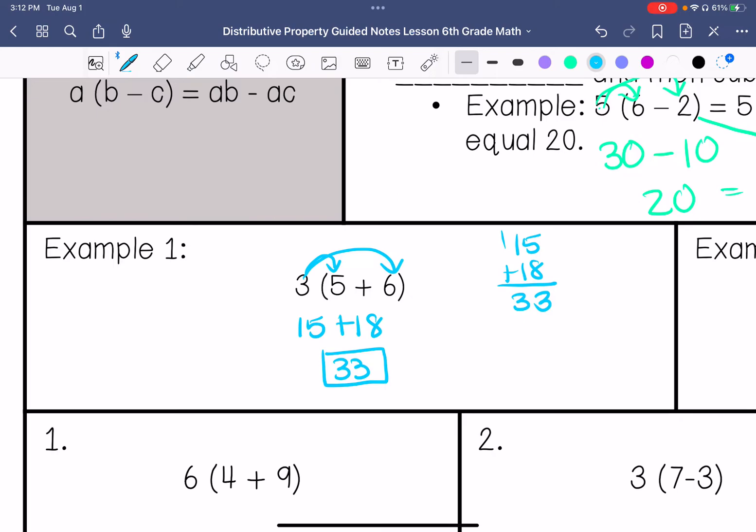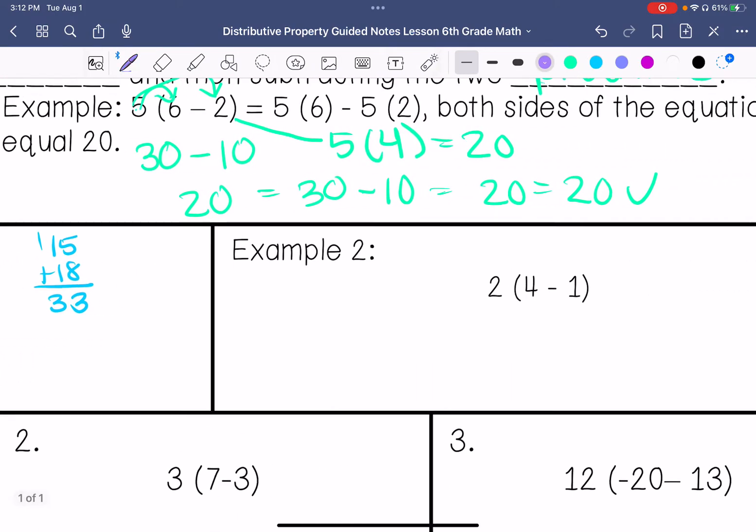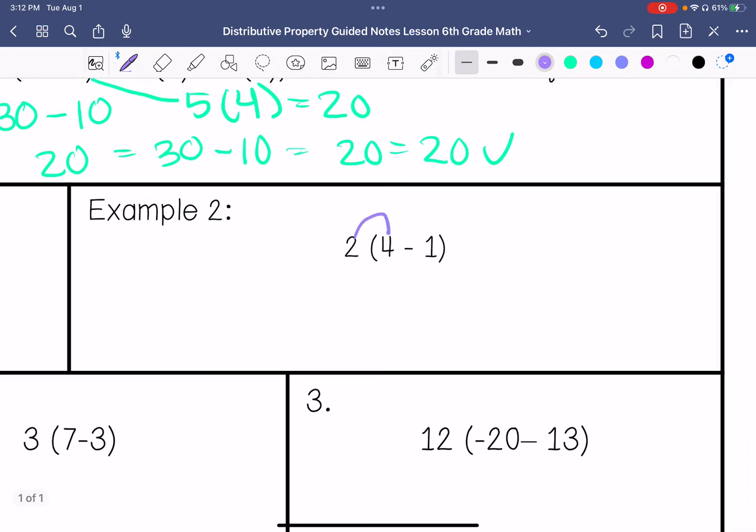So we're going to do example number 2. 2 times 4 is 8, 2 times 1 is 2, so we get 6.